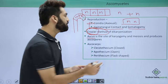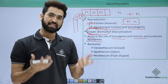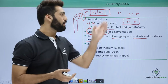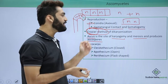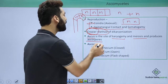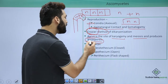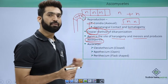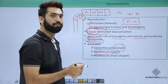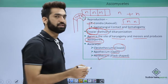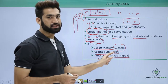The ascus will be the site for karyogamy, and meiosis will take place producing ascospores. Because of the name Ascomycetes, they have a fruiting body called the ascocarp. Inside the ascocarp there is the ascus where meiosis happens and ascospores are produced. The ascocarp can be different shapes: if it is closed it is called cleistothecium, if it is open it is called apothecium, and if it is flask-shaped it is called perithecium.